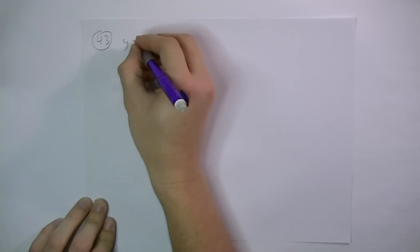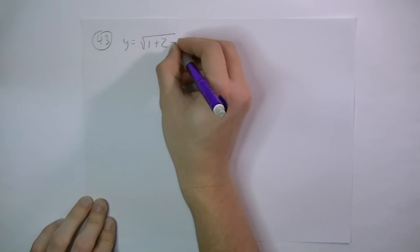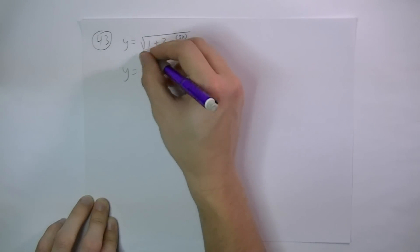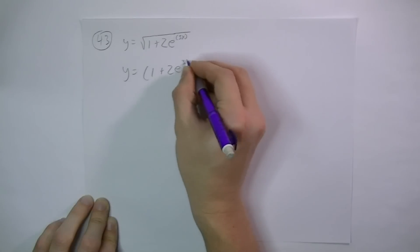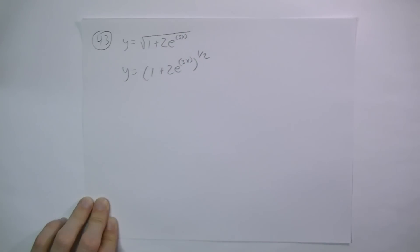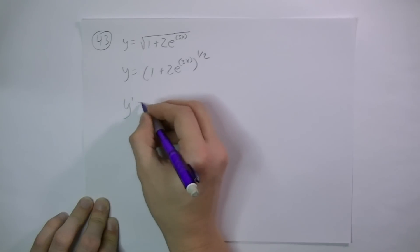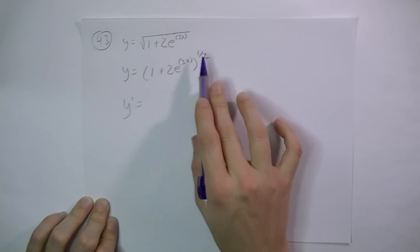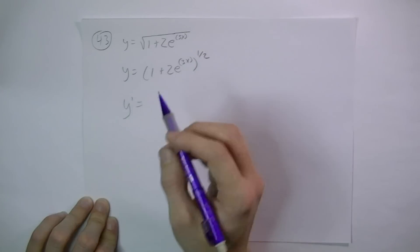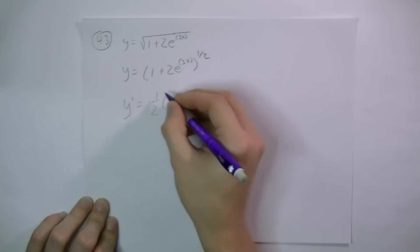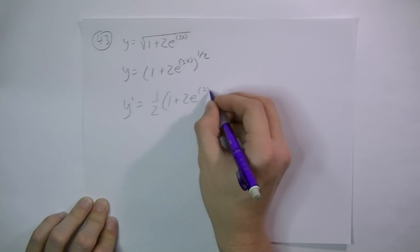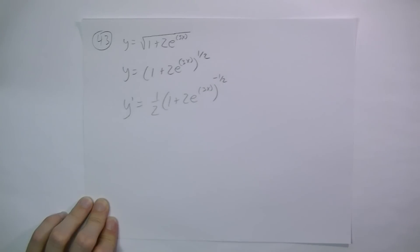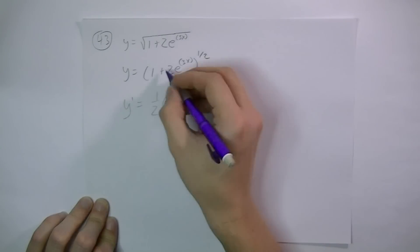Number 43. y equals the square root of 1 plus 2e to the 3x. I need this to be a fractional exponent rather than a radical before I can take the derivative — to the 1 half power. We'll have to do the chain rule here. The outermost function is everything being raised to the 1 half power. So power rule: the inside stays the same, then I subtract 1 from the exponent, which gives negative 1 half, and then we multiply by the derivative of the inside.